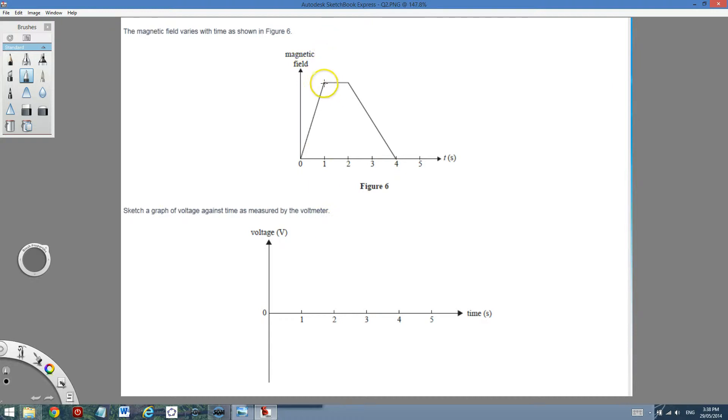I need to sketch the voltage graph measured by the voltmeter. Now, have a look. So from 0 to 1, let me write it down. The induced EMF is minus N and the rate of change of flux over time.